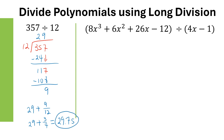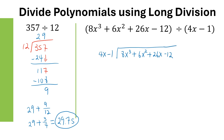We can use the same process when dividing polynomials. Since our polynomials are already written in descending order of exponents with no exponents missing, we can go ahead and divide using long division. We're dividing 8X cubed plus 6X squared plus 26X minus 12 by 4X minus 1.